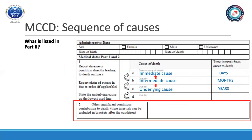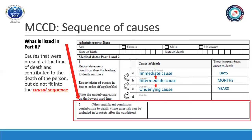In Part 2, you list the causes that were present at the time of death and contributed to death but do not fit into the causal sequence. Unlike Part 1, where only one condition can be listed per line, you can report multiple conditions in Part 2. The sequence of conditions is not of importance for these contributing conditions as it is for conditions listed in Part 1.